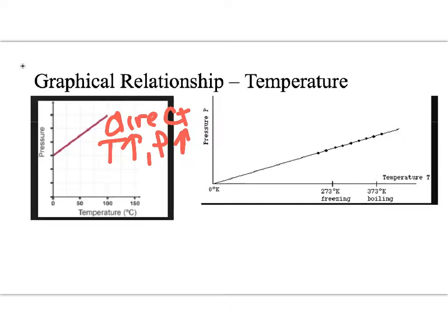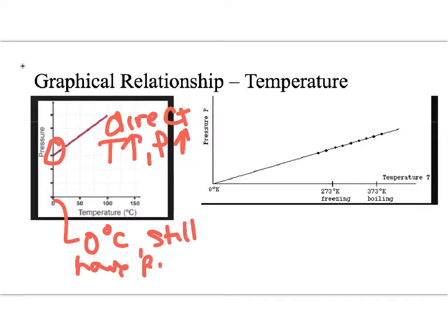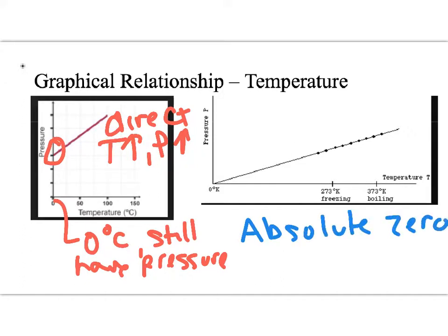But if you look at the graph on the left for temperature in degrees Celsius, it actually doesn't go through the origin. So when temperature is zero degrees Celsius, you still have pressure. The reason is because the particles are still moving inside of a solid, so you're going to have pressure. As long as particles are moving and can collide, you're going to have at least some pressure. It is not until we get down to absolute zero — which on the Celsius scale is negative 273 degrees Celsius — that you have zero pressure.